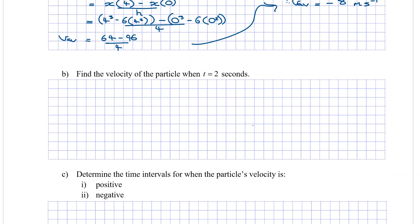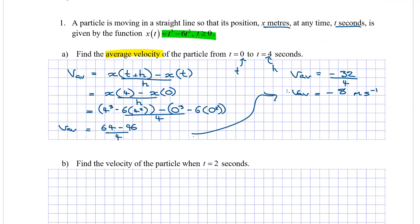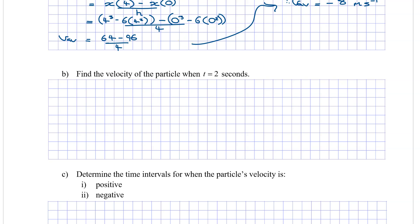Moving on — find the velocity of the particle when t equals 2 seconds. Remember, if we have a function that tells us the displacement, we can derive a function that tells us the velocity, because the velocity is the first derivative of displacement.